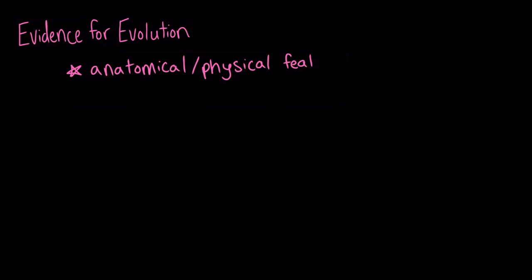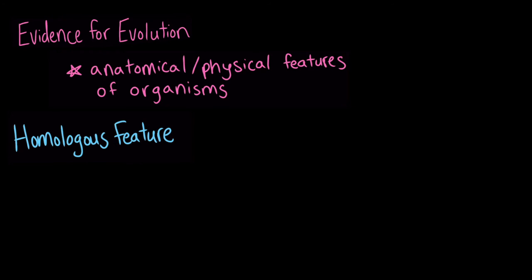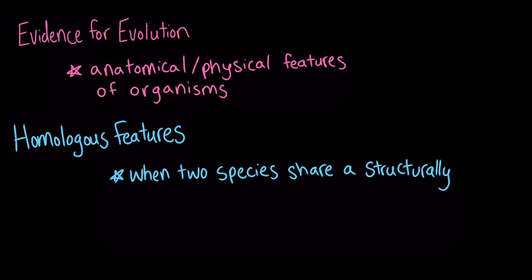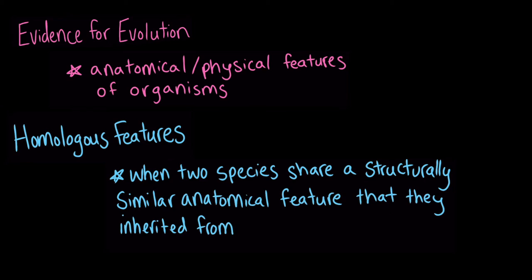You can find it by looking at the anatomical or physical features of organisms alive today. One way that scientists use information from the present day to make sense of past evolutionary relationships is by searching for clues called homologous features. When two species share a structurally similar anatomical feature that they inherited from a common ancestor, we say that the feature is homologous.